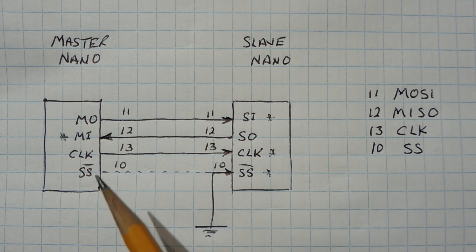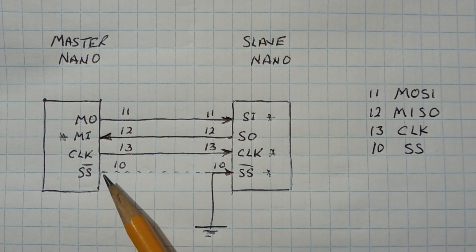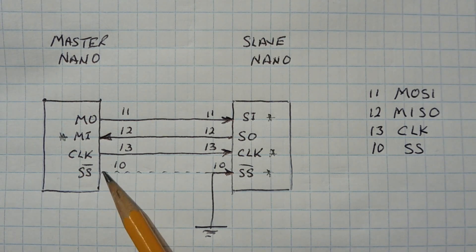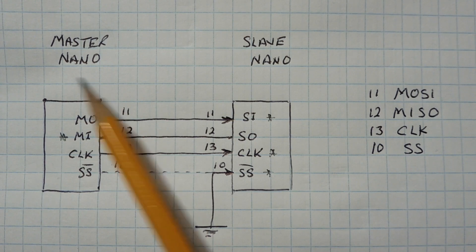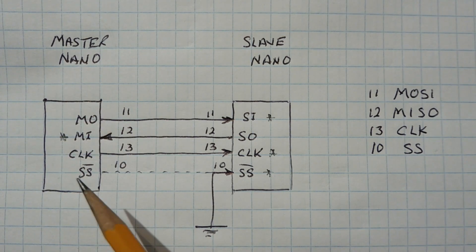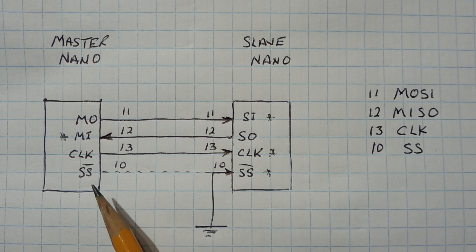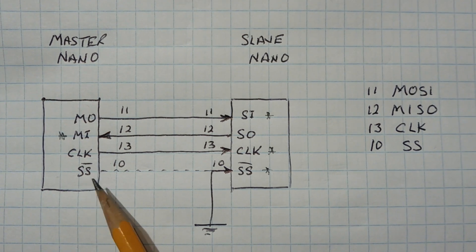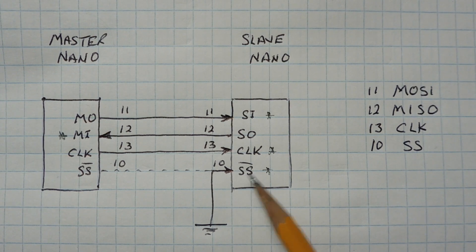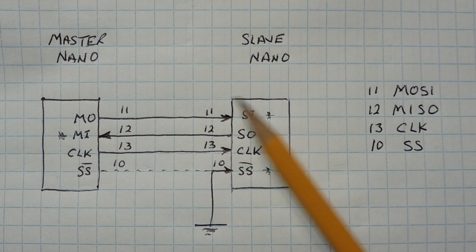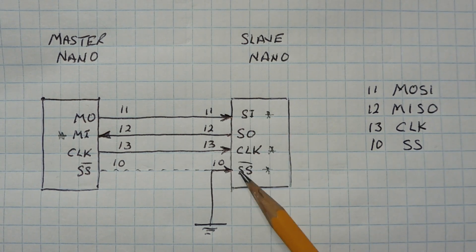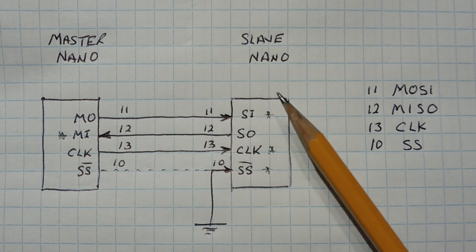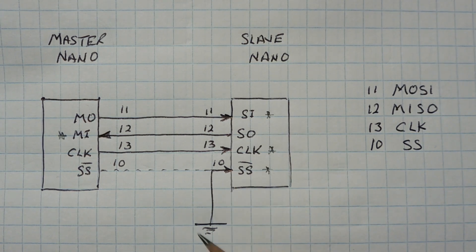There are a couple of details. The SS is not being used on the master, so you could use it as a GPIO output, but make sure you set it up as an output. If you make it an input and something drives it low, you'll turn that Nano into a slave, which would be confusing. That trips up a lot of people, so make sure your SS on your master is configured as an output. The SS on the slave is grounded — that's your tri-state control. When it's grounded, the data lines are active; if you drive SS high, the data lines will go into high impedance.